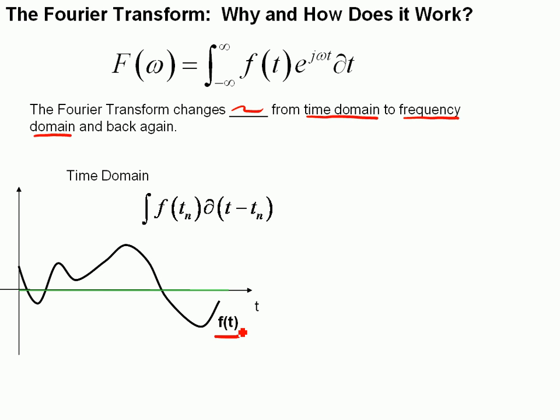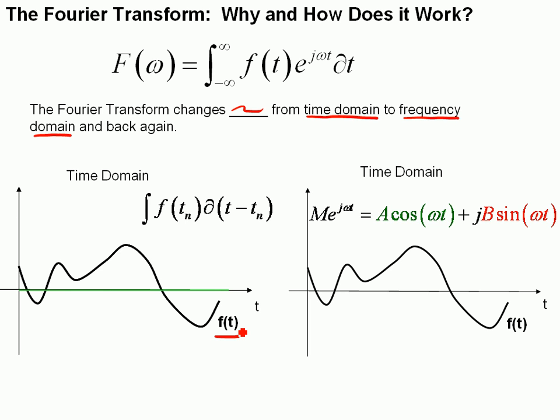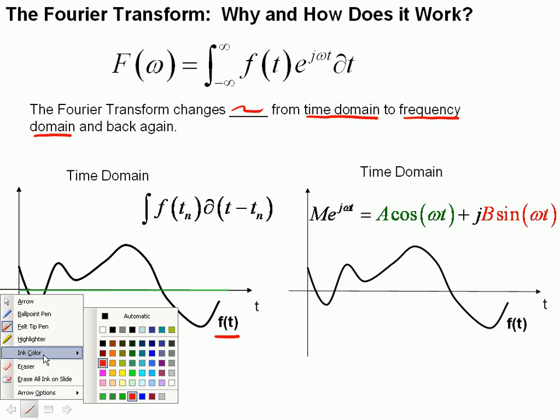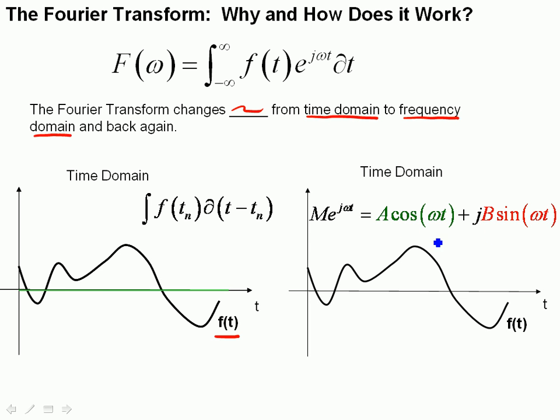Of course, there are other ways to represent signals in the time domain f of t. Instead of summing up points at each point in time, we can sum up functions that cover all time. And functions that cover all time are essentially waves. And remember, we describe a wave or a sinusoid as the magnitude of it with an exponential term. We can represent that through Euler's equation as essentially a real part that is the cosine, as well as an imaginary part that's proportional to the sine. The cosine has amplitude A, and the sine part has amplitude B for the real and imaginary parts, respectively.